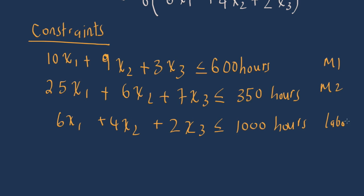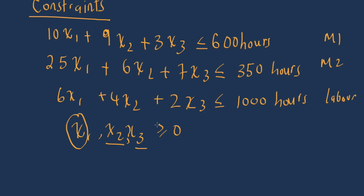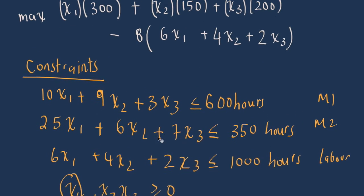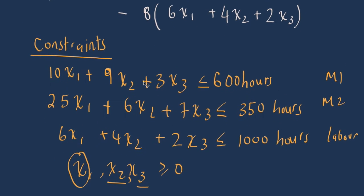The final thing to note is that x1, x2, and x3 all have to be greater than or equal to zero, because these are the number of units we make of each product and they must be non-negative. This gives us our complete linear programming formulation: we want to maximize the profit equation given these four constraints.